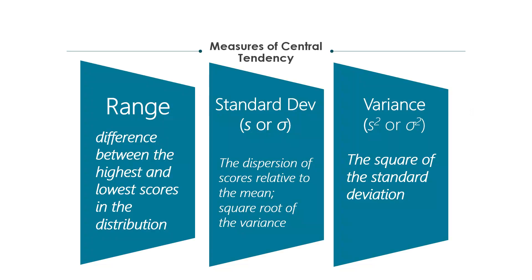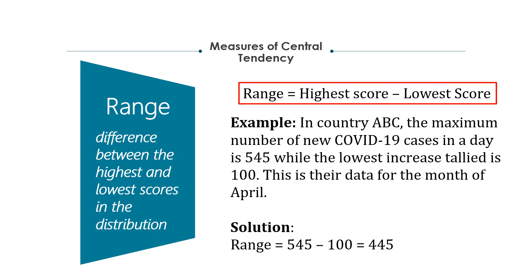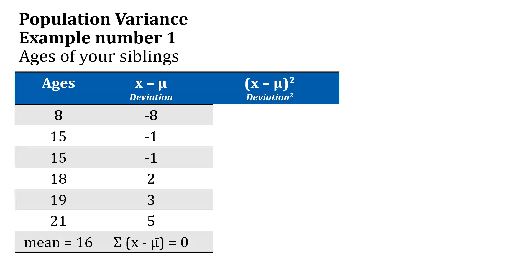Now let's proceed to measures of variability. We have three: the range, the standard deviation (denoted S for sample or sigma for population), and the variance (S-squared or sigma-squared). The range is the simplest — it's the difference between the highest and the lowest score. For example, if the highest number of COVID cases in one day is 545 and the lowest is 100, the range is 445. The weakness of range is that it only considers the extremes and ignores all numbers in the middle.